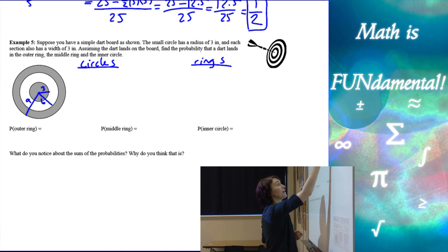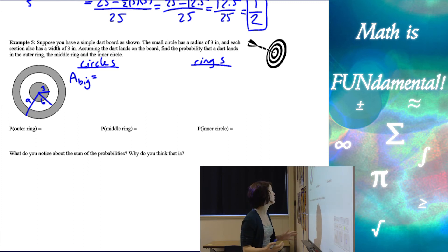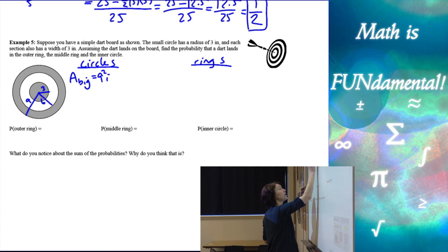So let's find the area of the big circle, the large circle, not the ring but the circle itself. So my radius is 9, 9 squared times pi is going to be 81 pi.